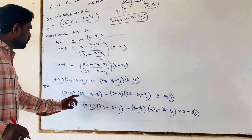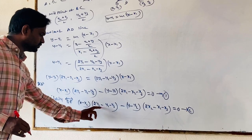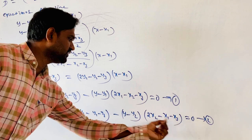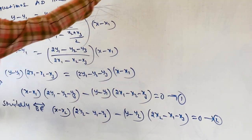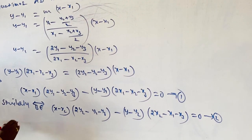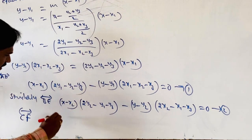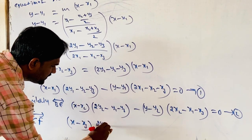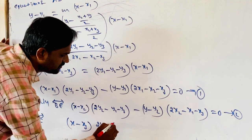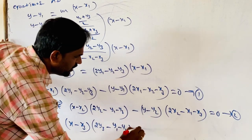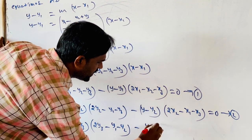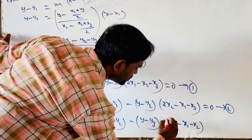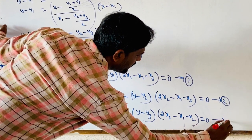For the CF line, with third vertex C = (X3, Y3): (X − X3)(2Y3 − Y1 − Y2) − (Y − Y3)(2X3 − X1 − X2) = 0. This is Equation 3.